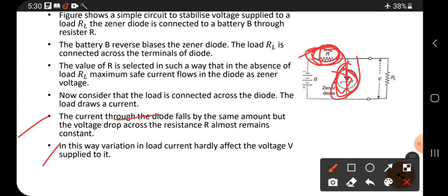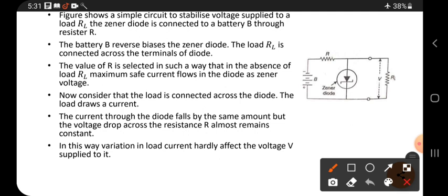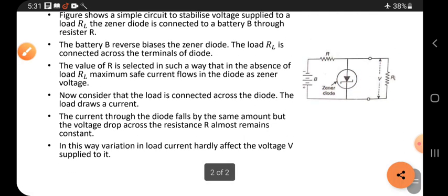In this way, variation in load current hardly affects the voltage supplied to it. Mostly current passes through the load only, and constant current can pass through the diode. That is why the diode can create a constant voltage, and through this the constant voltage passes. That is why it regulates, it controls the voltage, and that is why it is used as a voltage stabilizer.